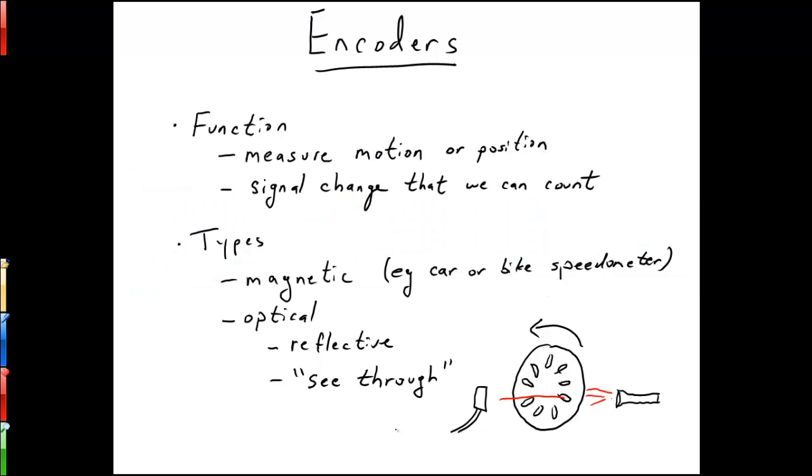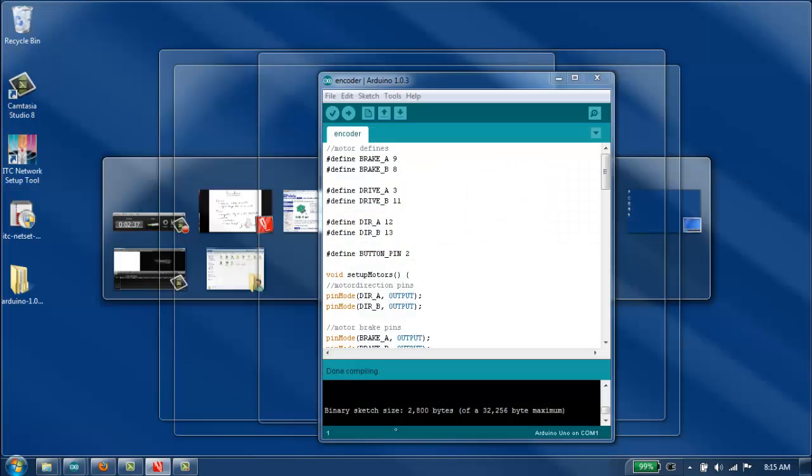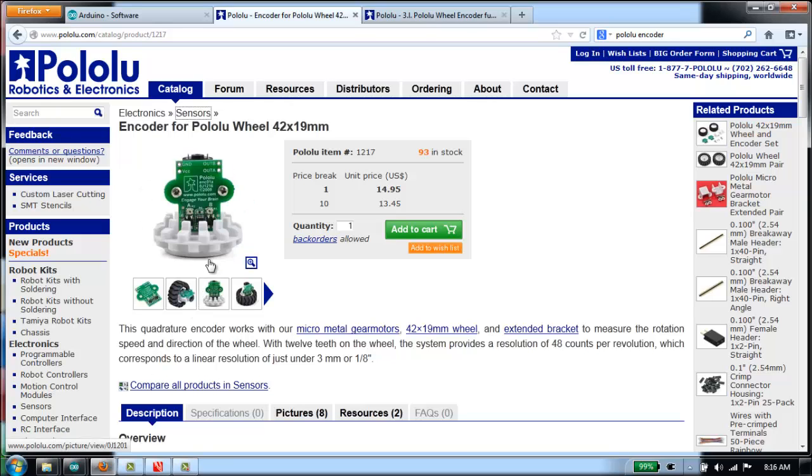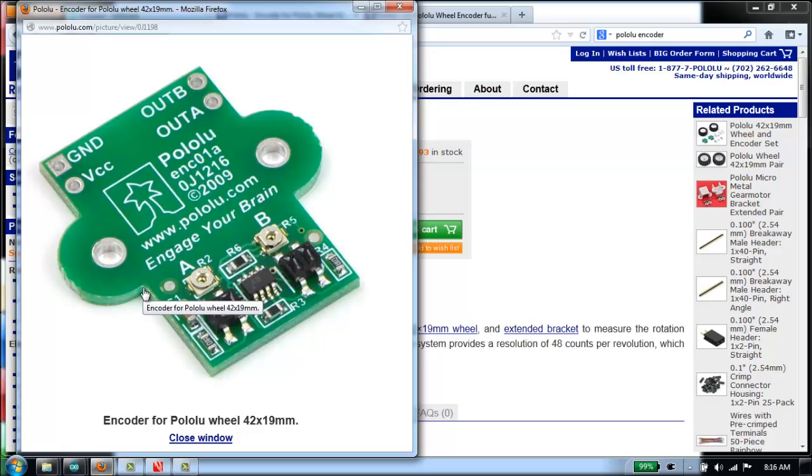Now the encoders that we're going to look at today are these encoders here from Pololu. We've got these encoders because they are made to go with the wheels that we bought and the system works pretty well. Basically what we have for this encoder is two reflective sensors here. These reflective sensors are two different channels, A and B, and they detect whether or not they're looking at either a white surface or a black surface.